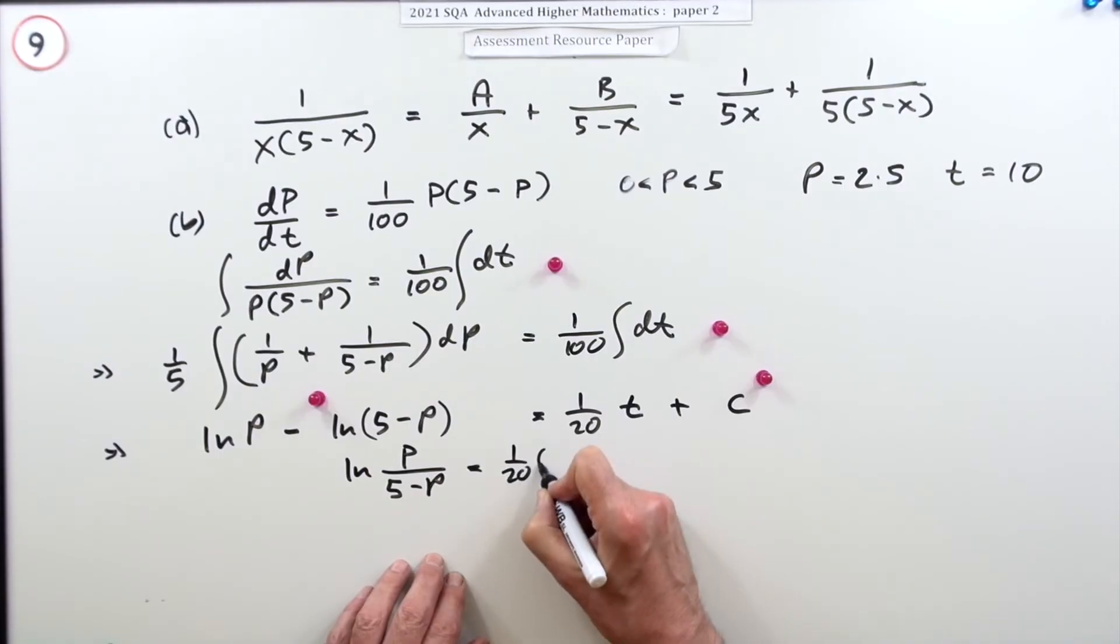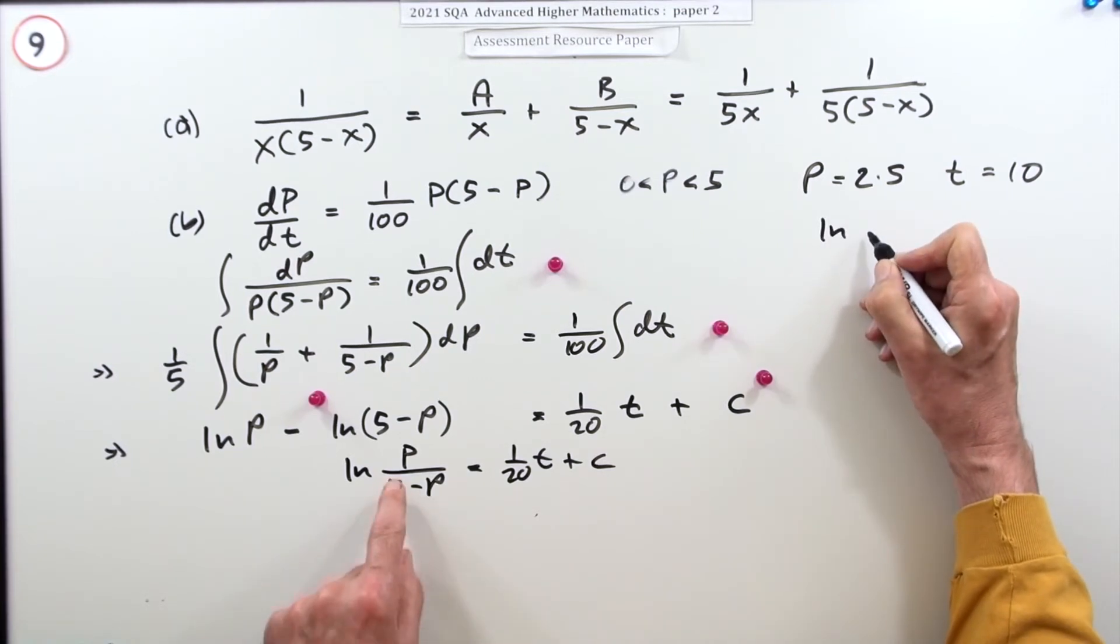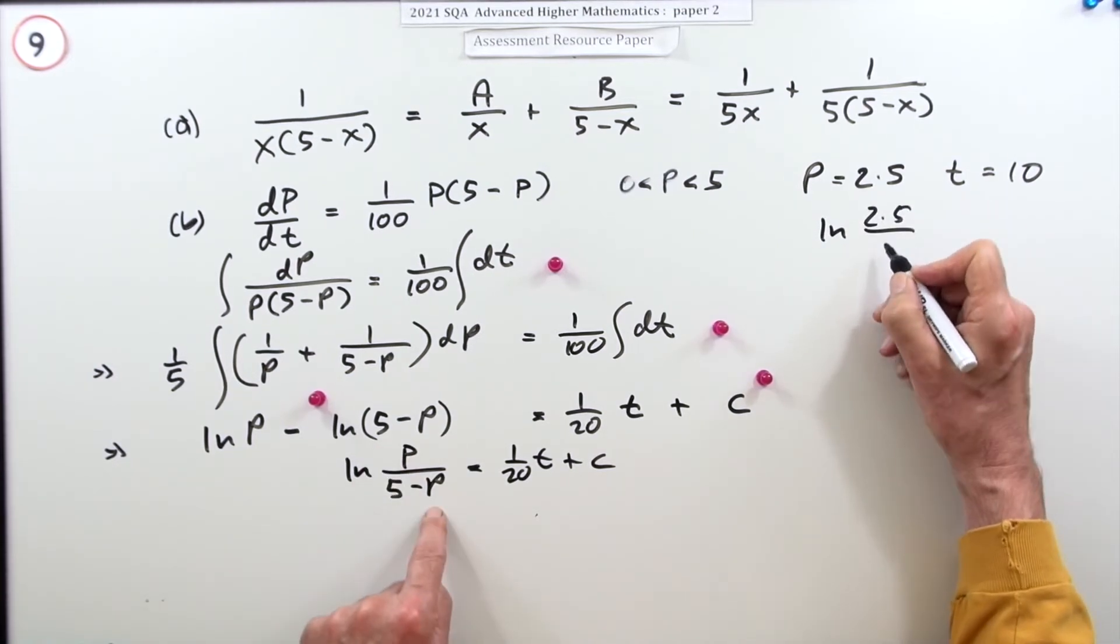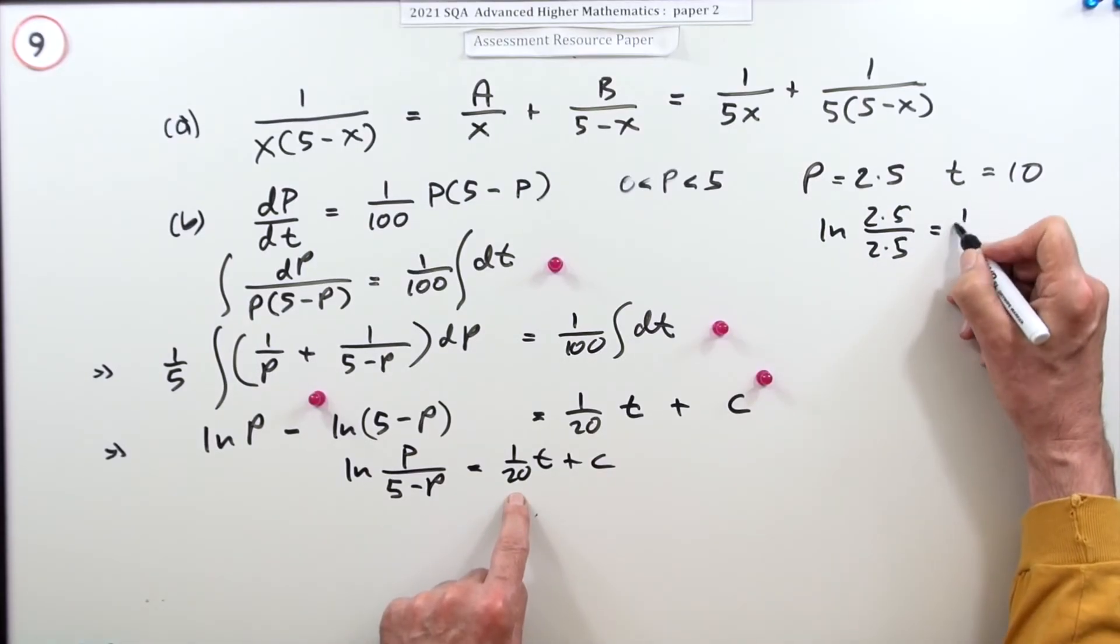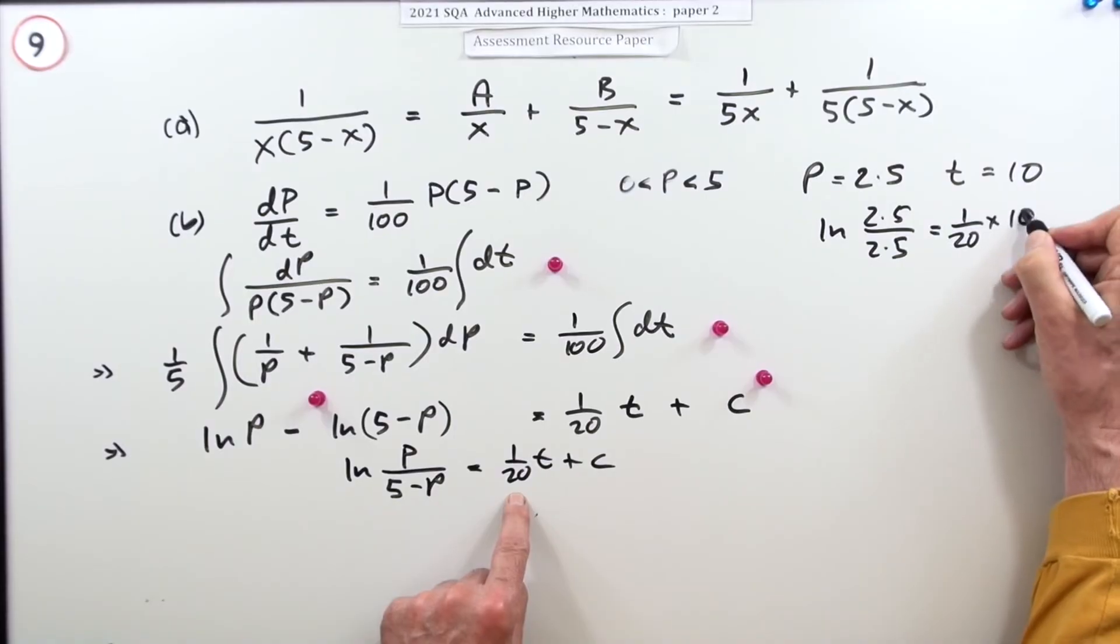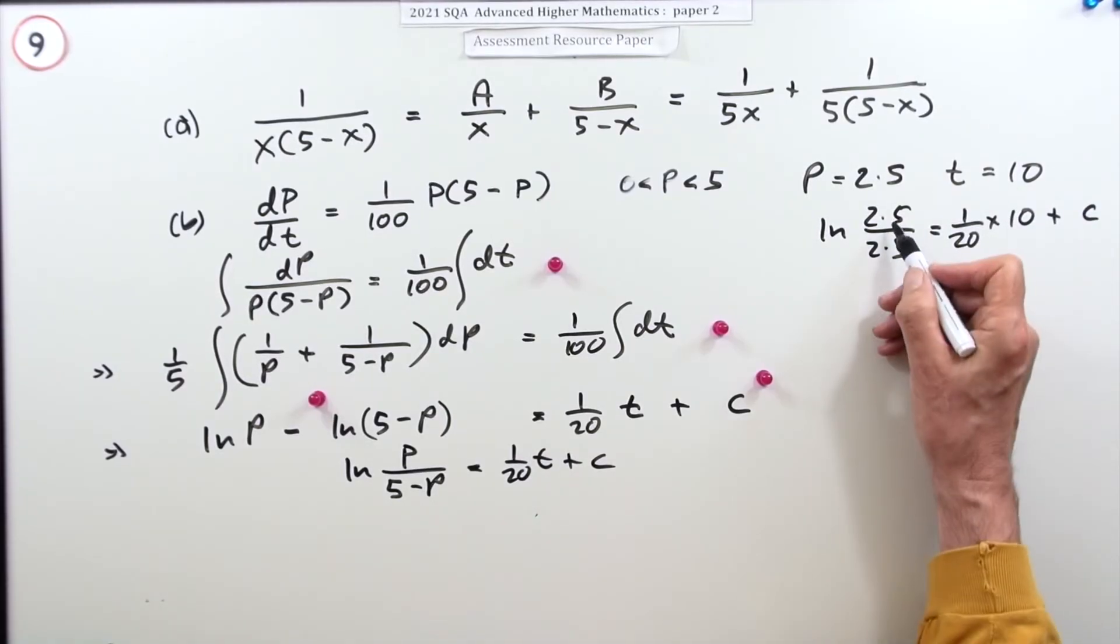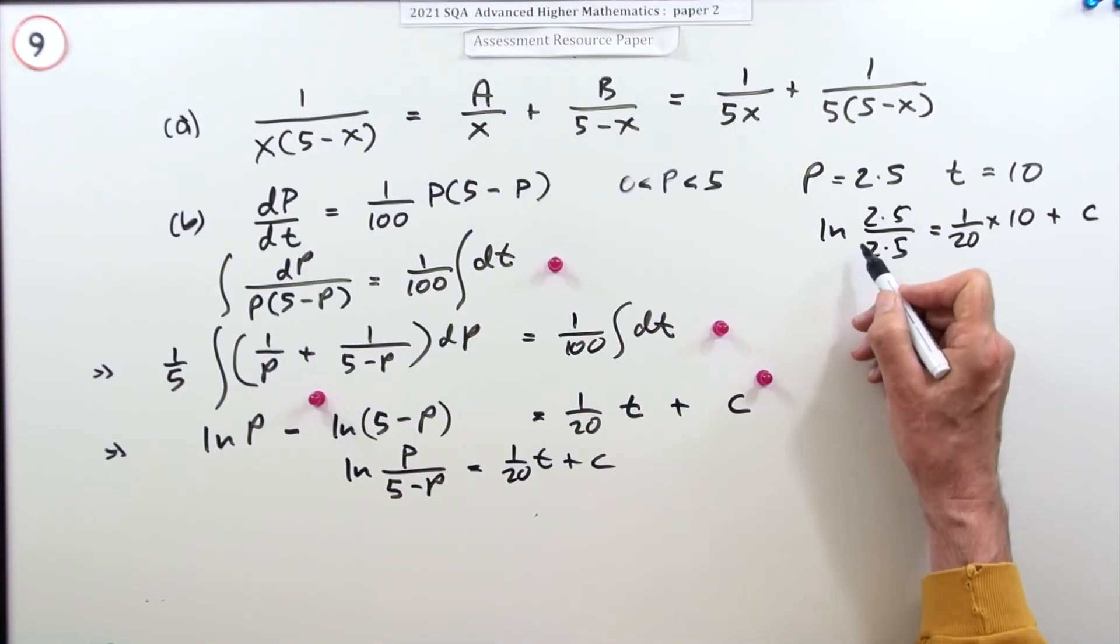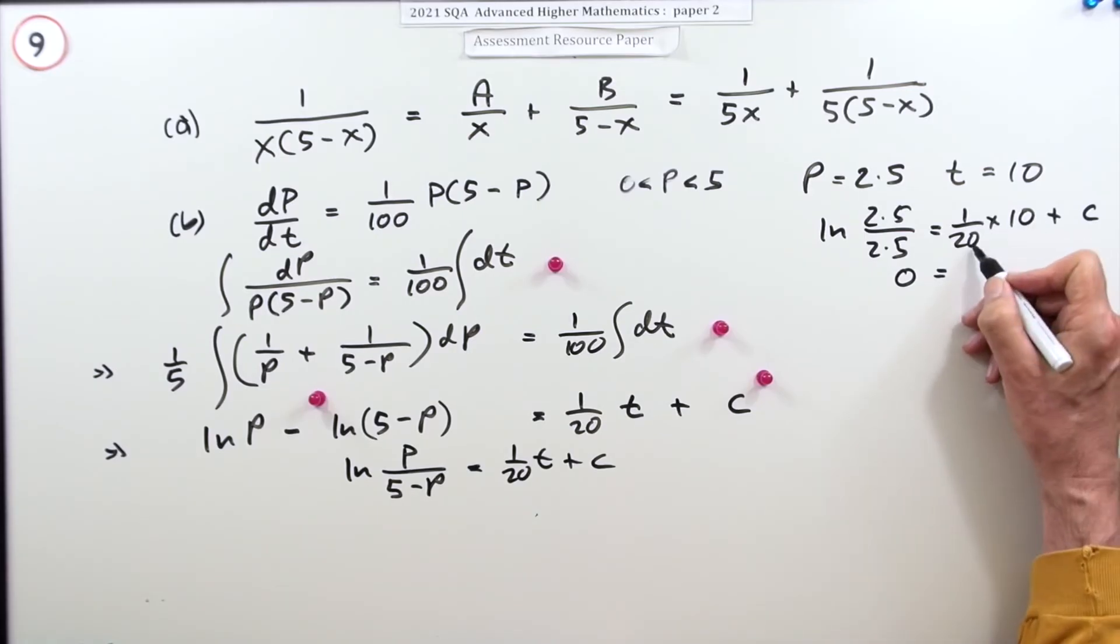Equals a twentieth of t plus something. Find that something. I'm going to do that over here. So ln of P is 2.5, 5 minus 2.5 is also 2.5, and that should be a twentieth of 10 plus something. Well, 2.5 over 2.5 is 1, log of 1 is 0, so that just says 0 equals and a twentieth of 10 is a half.